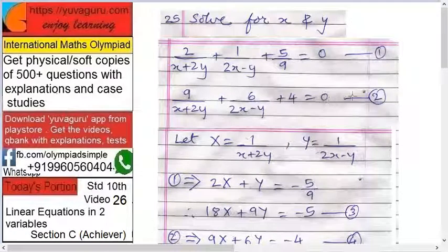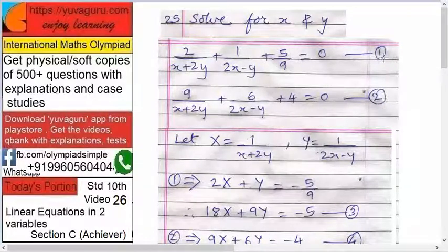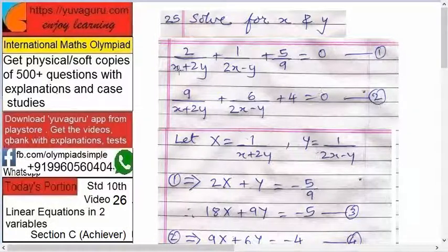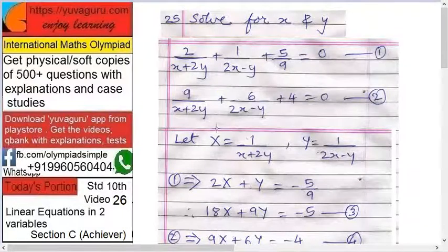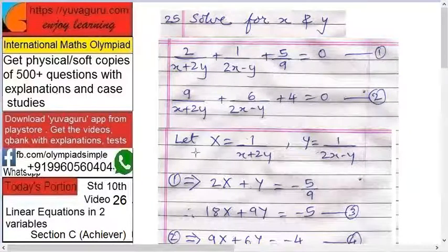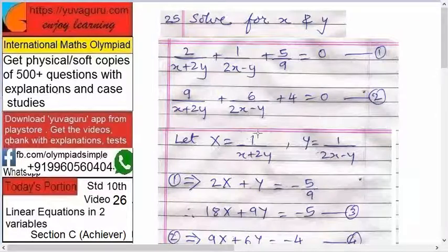equals to 0, this is equation number 2. Now we have to solve this. So what you do is you can see one thing in common that in both 1 and 2 the denominator, one is x plus 2y, x plus 2y, and 2x minus y, 2x minus y. So what you do is let capital X equals to 1 upon